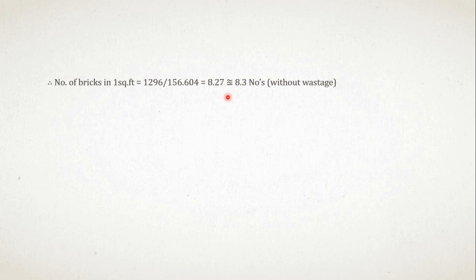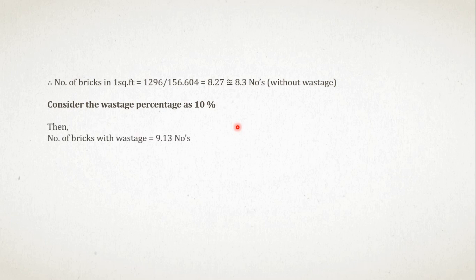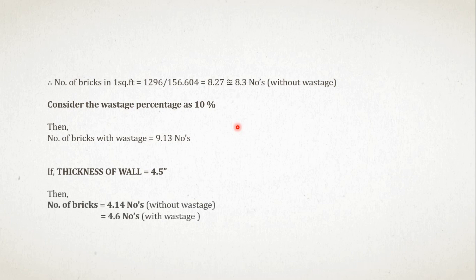This is the number of bricks in one square foot without wastage. Considering the wastage percentage as 10%, the number of bricks required in one square foot equals 9.13 numbers, say 9 numbers. If the thickness of wall is 4.5 inch, then the number of bricks required in one square foot with wastage is 4.6 numbers and without wastage is 4.14 numbers.